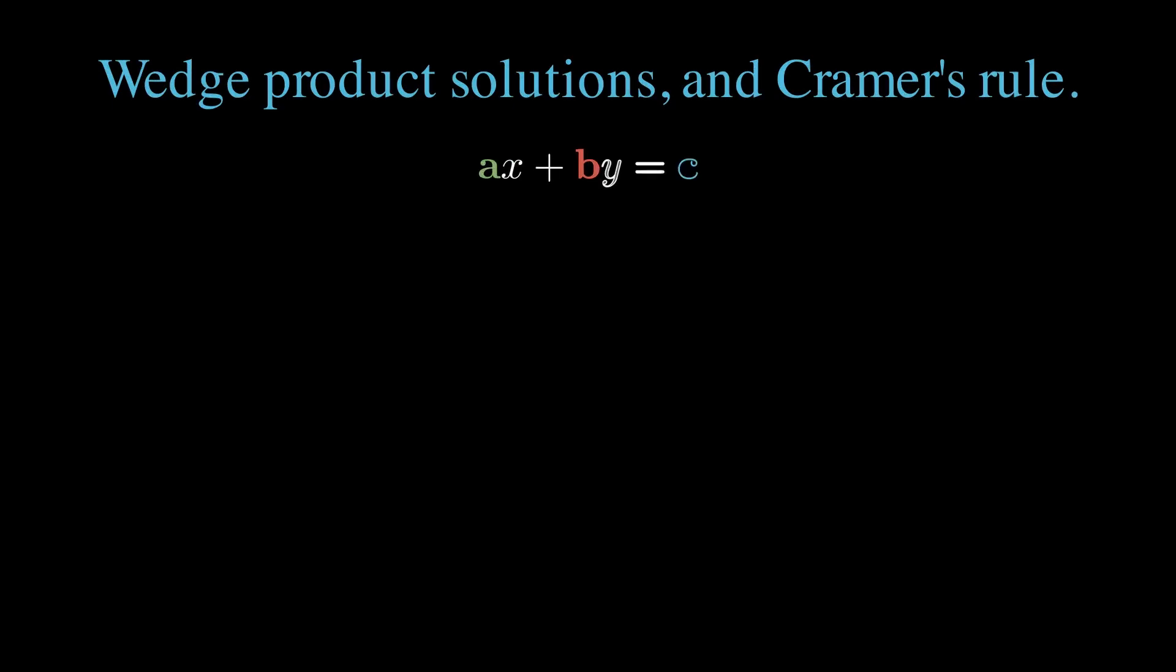Suppose that we want to solve a two-variable problem ax plus by equals c, where a, b, and c are vectors in some n-dimensional vector space. We can do this with the wedge product by wedging both sides of the equation with either a or b.